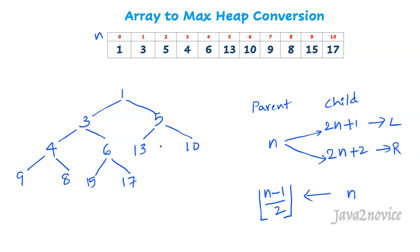Now let's heapify. We will discuss max heap heapification — you can try min heap heapification on your own later. In a max heap, the parent node value must be greater than or equal to its child node values. We need to swap node values accordingly during the heapification process. We will start the process from the last node of the array, going from last to first in reverse order. 17 is the last node; it is a leaf node with no children, so it is already following max heap properties.